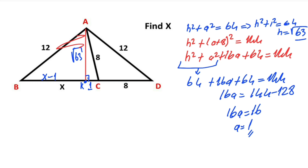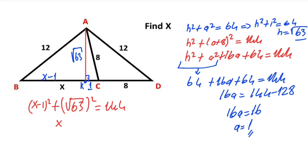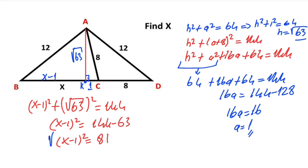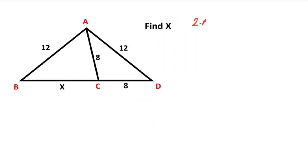For this triangle, if we apply the Pythagorean theorem we get the value of x. So (x minus 1) squared plus (root 63) squared equals some value. Taking the square root of both sides of the equation, x minus 1 equals 9, so x is going to be 10 units. Okay, this was the first method. Now we will calculate the value of x using the second method.